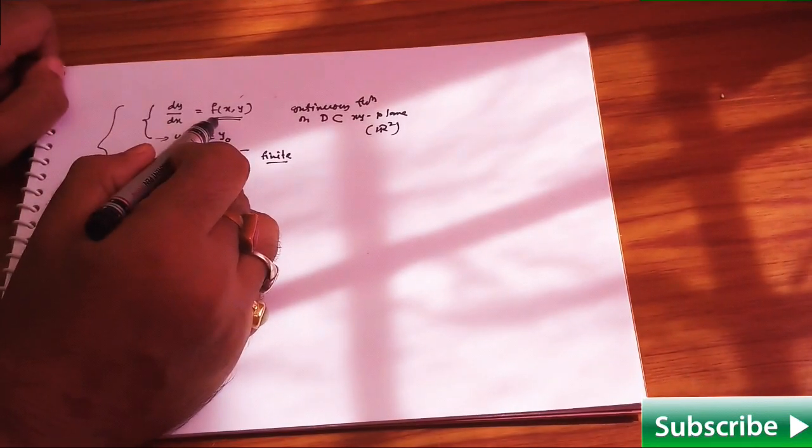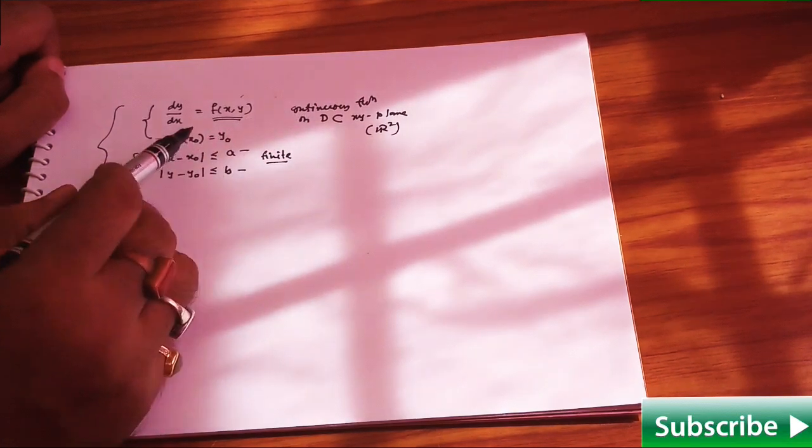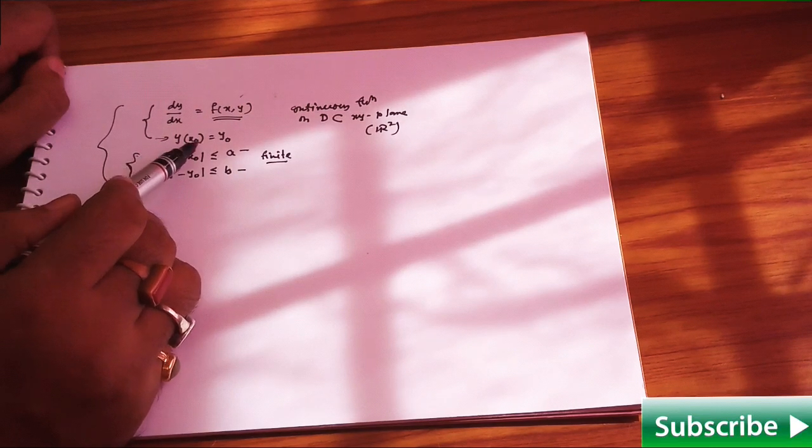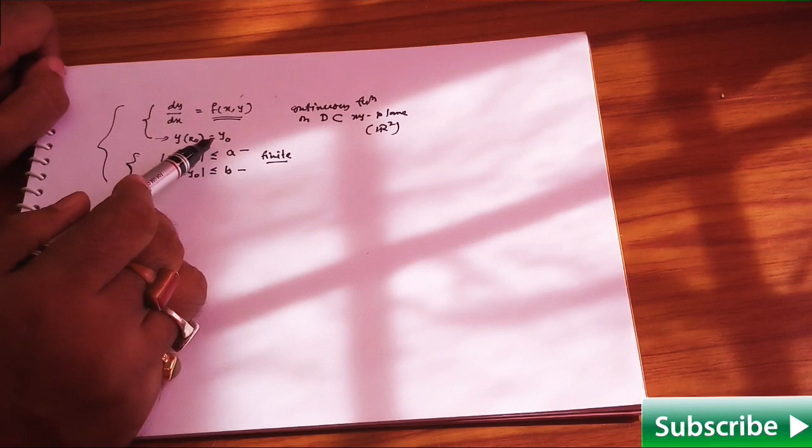Basically, this function f of xy must be a continuous function on some domain D, and your initial condition is y of x naught equals y naught. This is the initial condition.